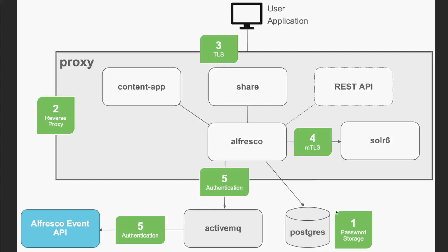With these five simple steps, you can increase the security on your system: protecting password storage in the database, creating a web proxy to protect access to UI and REST API applications, adding TLS encryption for HTTPS on every communication, increasing security between Alfresco and Solr with Mutual TLS so all requests are authenticated, and adding a username and password for ActiveMQ so only authorized clients can consume and produce events. Hope that was helpful — see you next time.